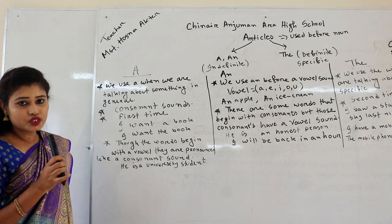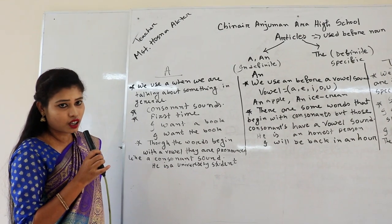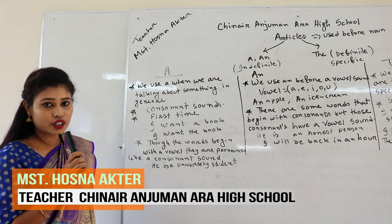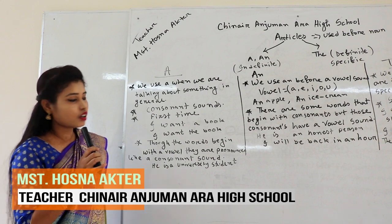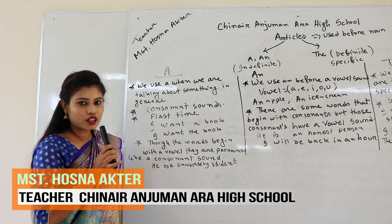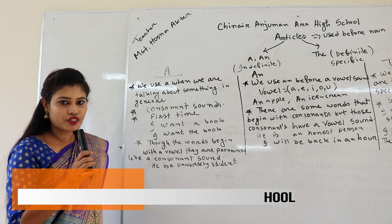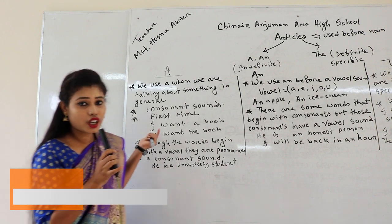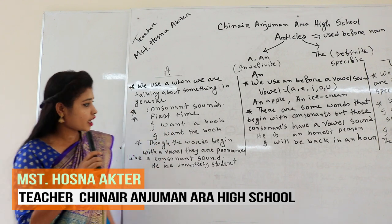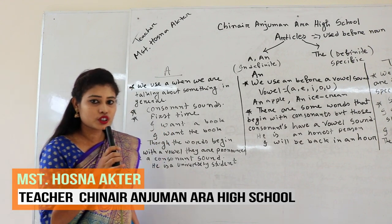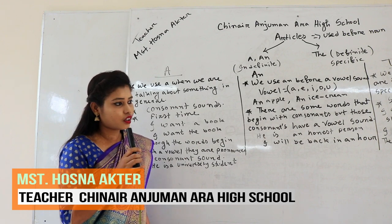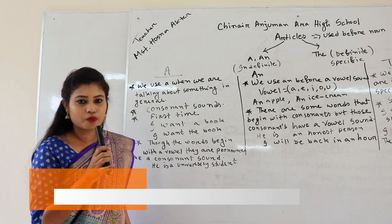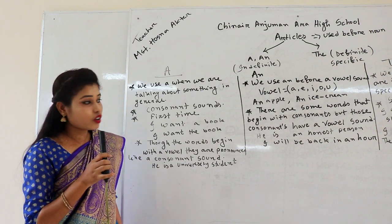Let's try to know how to use 'a', 'an', and 'the'. Our first article is 'a'. We use 'a' when we are talking about something in general — that is, something which is not specific or particular. For example, 'I want a book.' I don't mention any specific book — it may be a grammar book, it may be a novel, or it may be a story book.